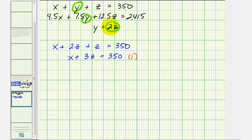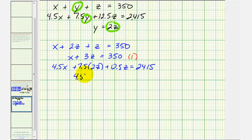Now performing the same substitution into the second equation gives us 4.5x plus 7.5 times 2z plus 12.5z equals 2415. So 15z plus 12.5z is 27.5z. Now we have 4.5x plus 27.5z equals 2415.